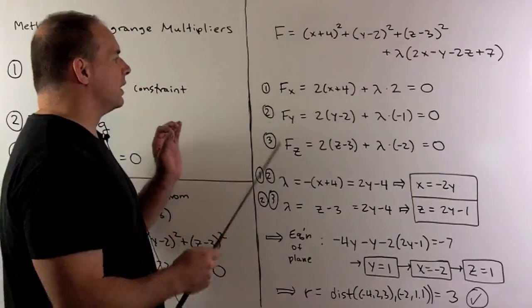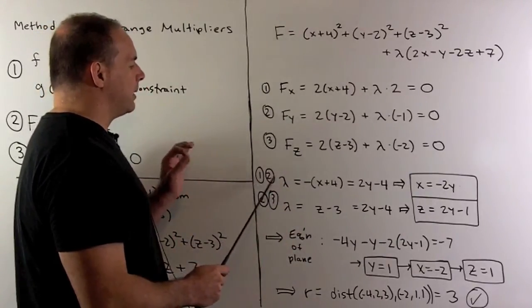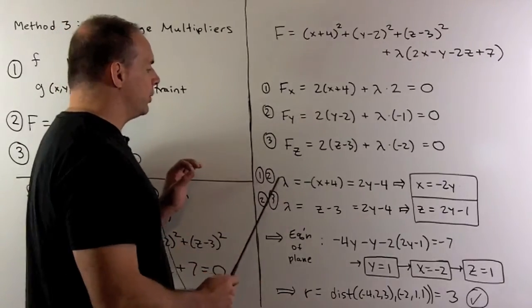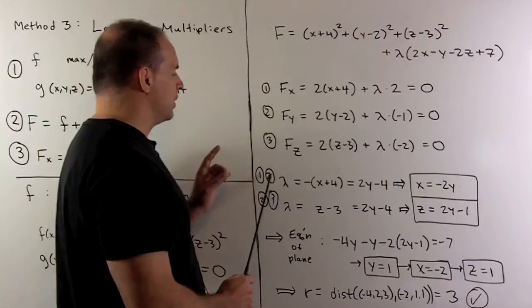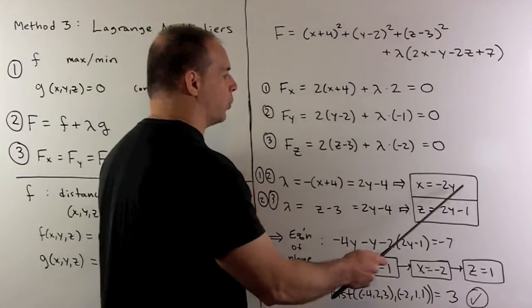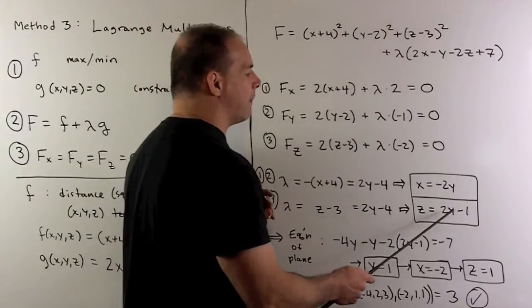Now, I'm going to solve for lambda in each of these. Then, we'll set lambda equal to what we get from 1 and 2 and 2 and 3. So, from 1 and 2, when we solve, I get x equal to minus 2y. And 2 and 3, when we solve, we get z equal to 2y minus 1.